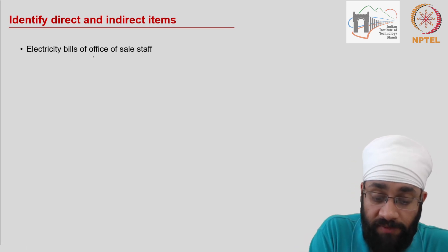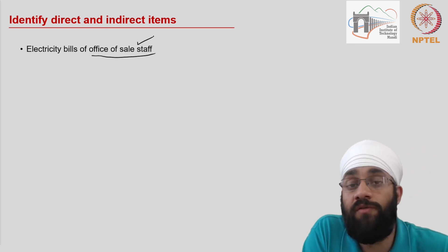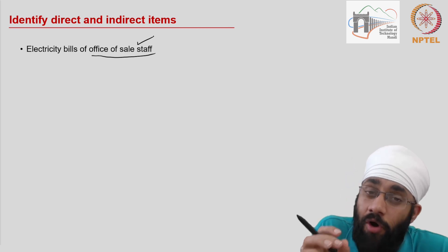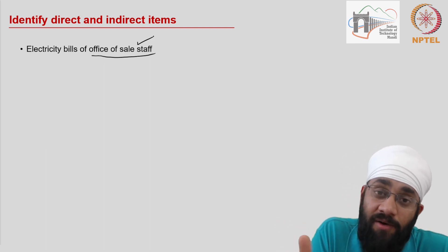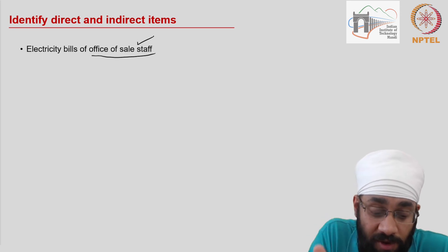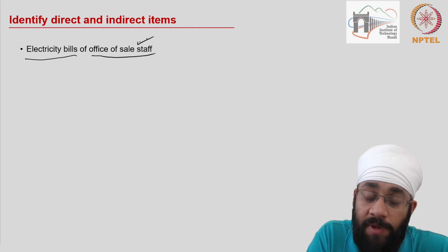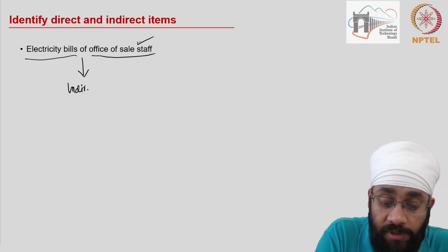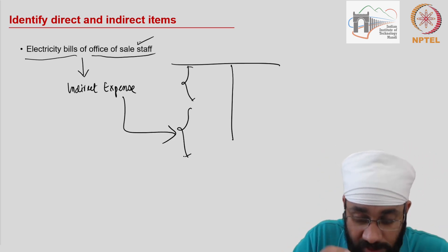Next is electricity bills of the office of sales staff. The question specifies this is the office of sales staff, not a factory supervisor. The same type of expense can be direct or indirect depending on context: rent of sales office versus rent of manufacturing supervisor's office, or electricity bill of sales staff versus electricity bill of the factory outlet. As long as the expense relates to manufacturing, it is direct. Since this relates to sales, it is an indirect expense, shown in the second half of the profit and loss account.